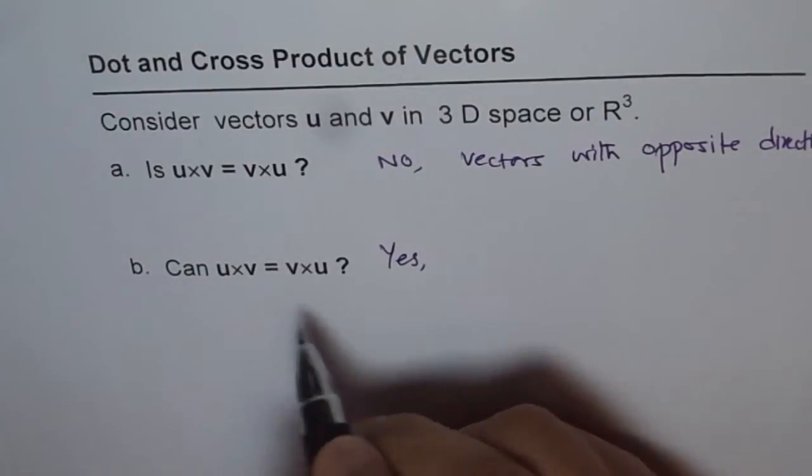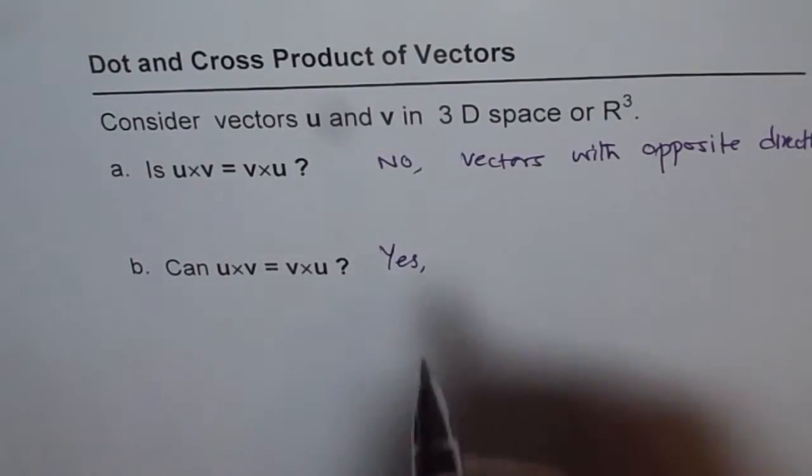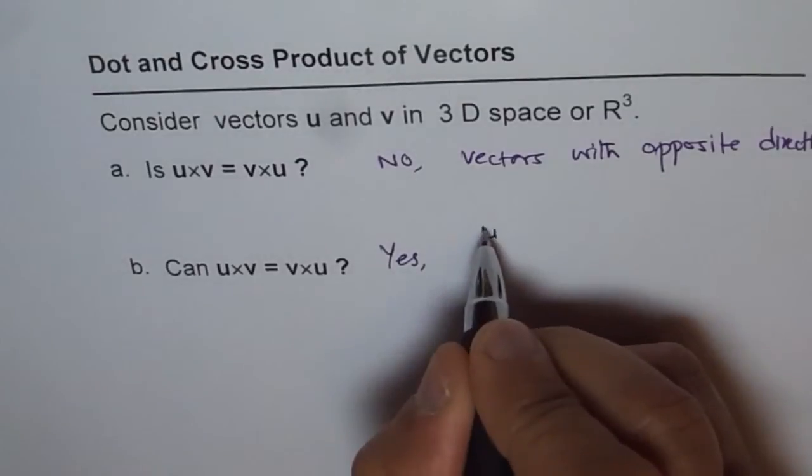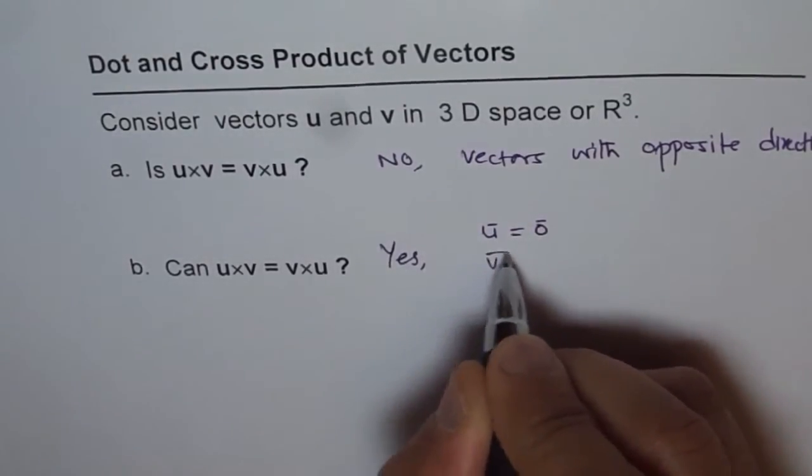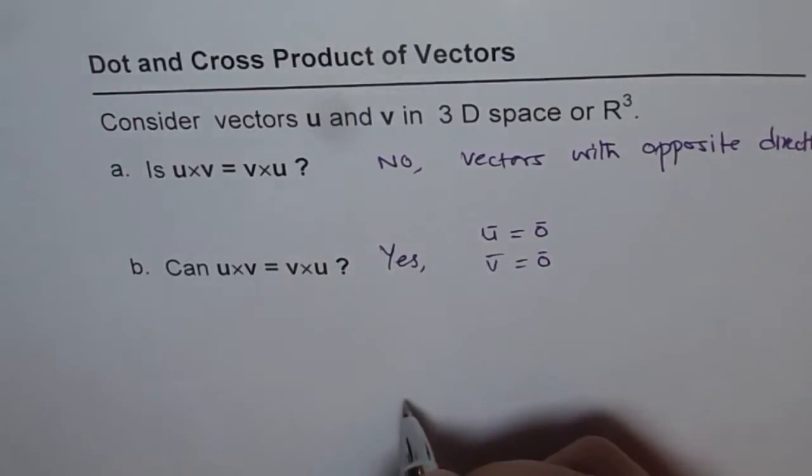Now, let's list out the conditions when they can be equal. They can be equal if vector u is a 0 vector or if vector v is a 0 vector.